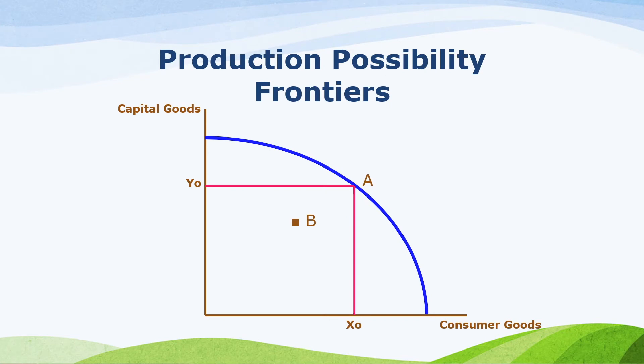Let us assume the production of capital goods and consumer goods again. Production inside the PPF, example point B, means the country is not using all its resources.